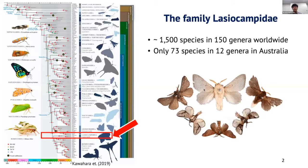We know that moths are so diverse, and we have about 70 families in Australia, and Lassiocampidae is one of them. The tree on the left shows where Lassiocampidae, including the Simphita moths, are placed in the Lepidoptera phylogeny. In Lassiocampidae, there are about 1,500 species in 150 genera distributing worldwide. However, only 73 species in 12 genera are found in Australia.